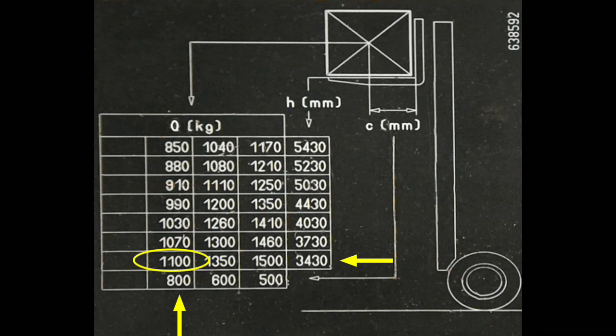And once more, the higher we go, the less stable everything becomes. Until ultimately in the top left hand corner, if we have an 800 millimeter load center and we wish to lift to a height of 5.43 meters, our capacity now is a mere 850 kilograms.